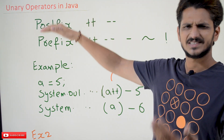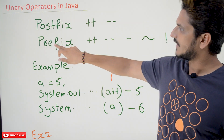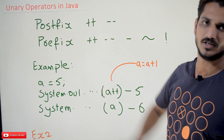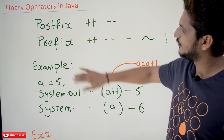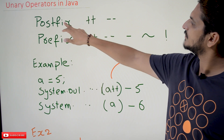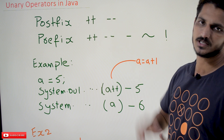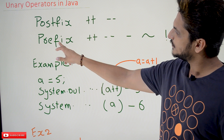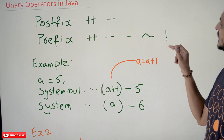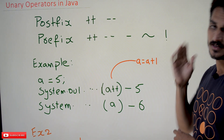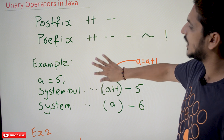In unary operators, you are going to understand them very well with examples. We have two types: postfix and prefix. The postfix symbols are ++ and --. Similarly in prefix we also have ++, --, single minus, the bitwise complement symbol (~), and the logical not symbol (!). We will understand what purpose we use these symbols with examples.